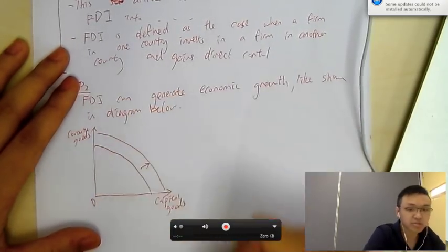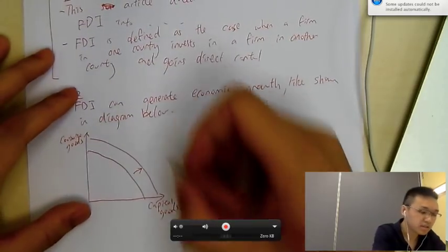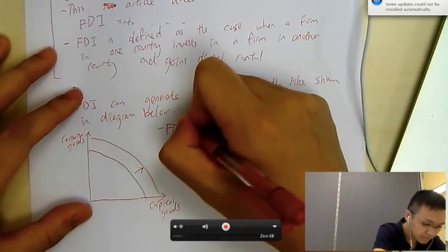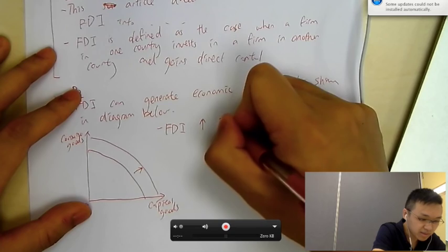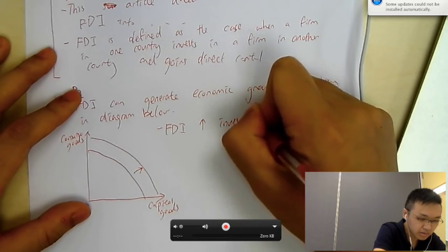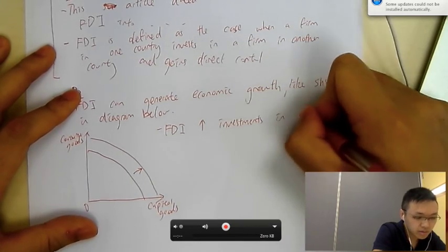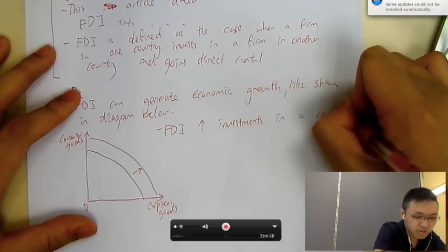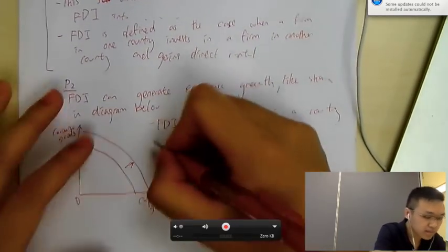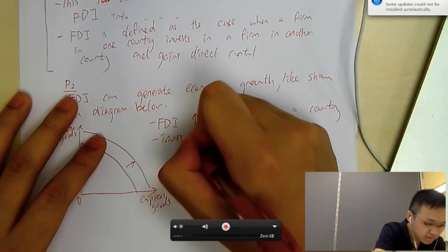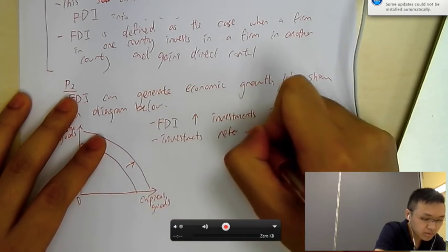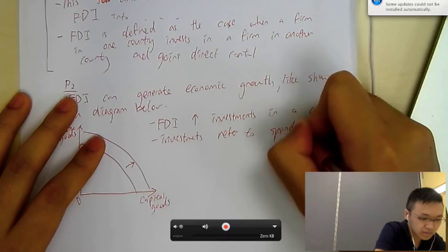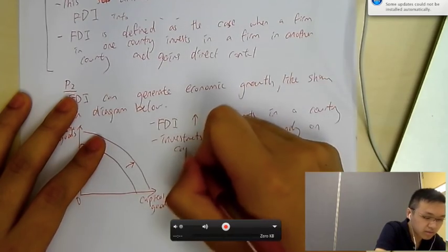You can draw the PPC shifting out. So, what does FDI do? So, first of all, FDI increases investments in their country, right? So, firms, what does investment? So, you can say, investments refer to spending on capital goods, right?